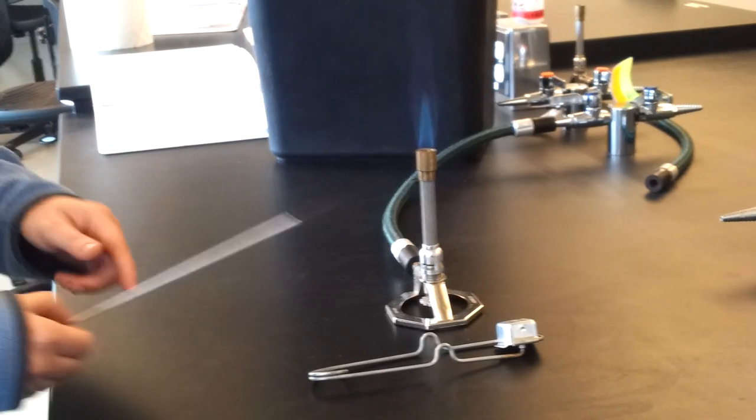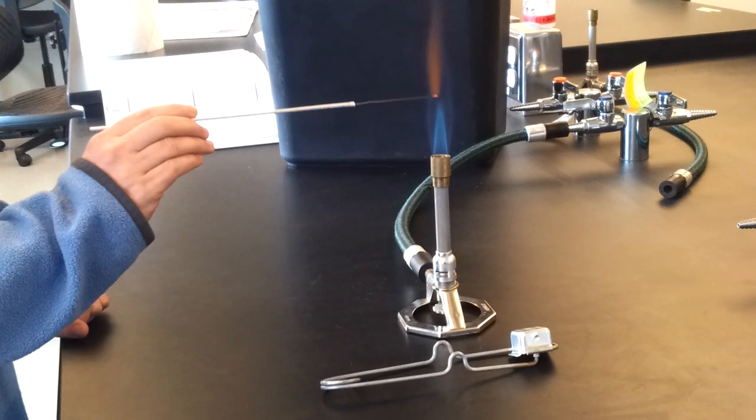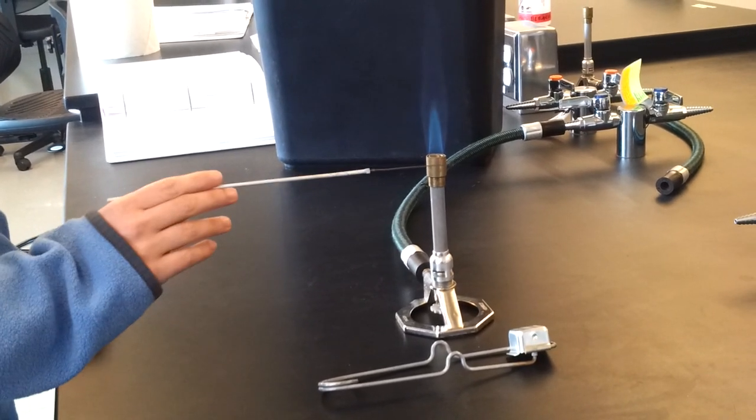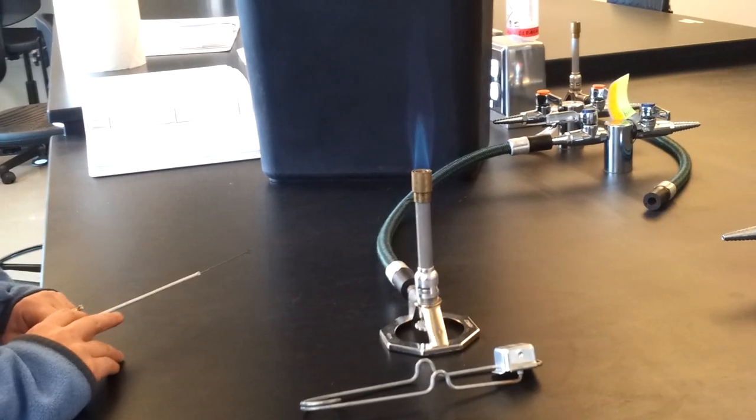You'll notice, I'll use the loop to show you, it has this inner blue cone, and that's what you want to see, and then there's an outer, lighter, or darker blue cone.